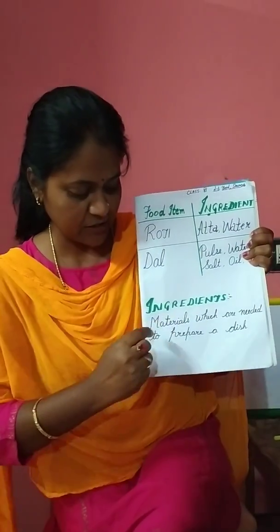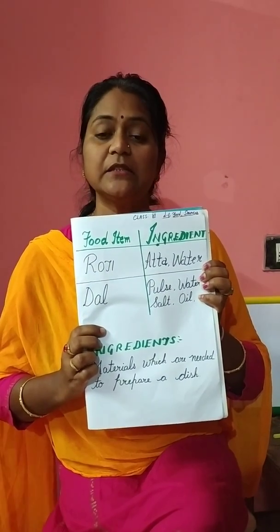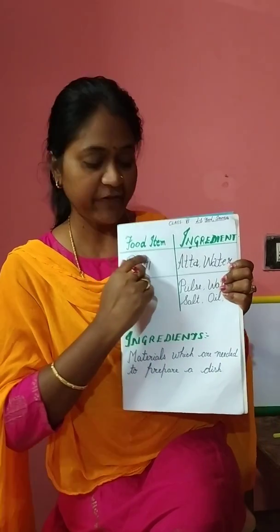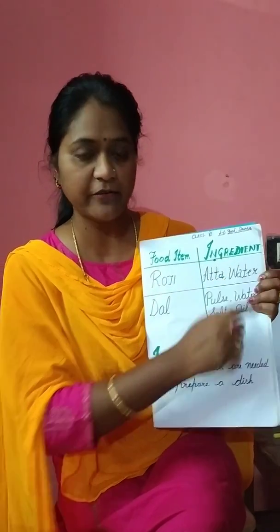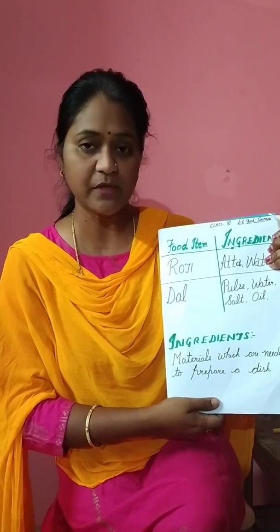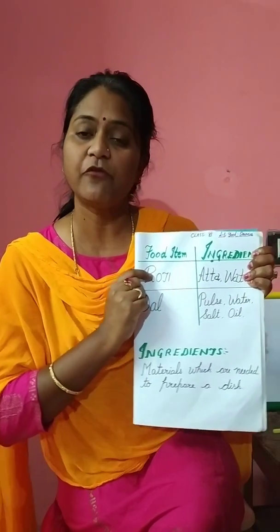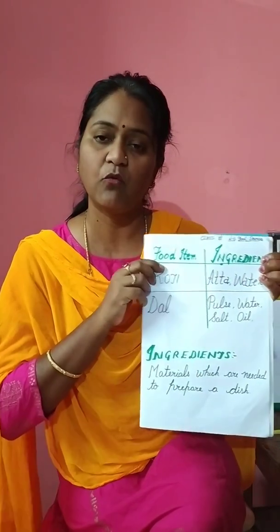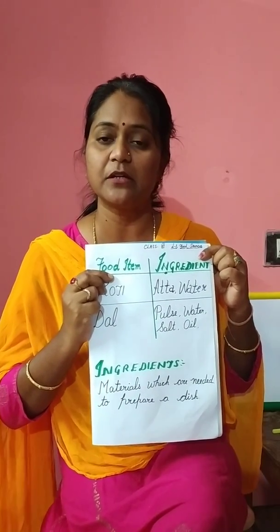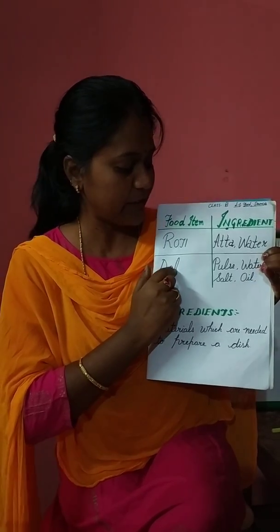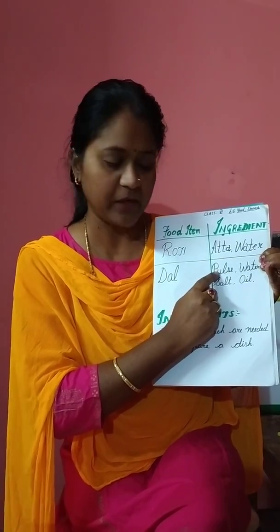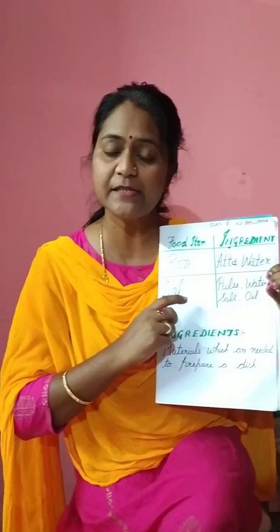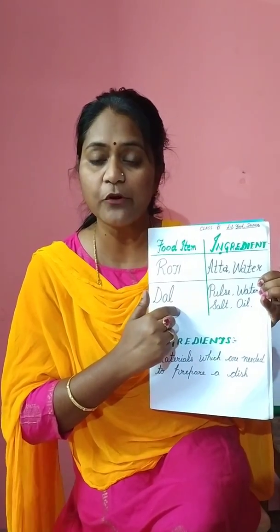When you observe the ingredients, you will find that these ingredients also come from a variety of sources. The materials which are needed to prepare a dish are known as ingredients. I have made one table — on one side I have written the food item and on another side the ingredients. For making roti you need wheat flour and water — those are two ingredients. For dal, the ingredients are pulse, water, salt, oil, and spices. All these ingredients will make one bowl of dal.